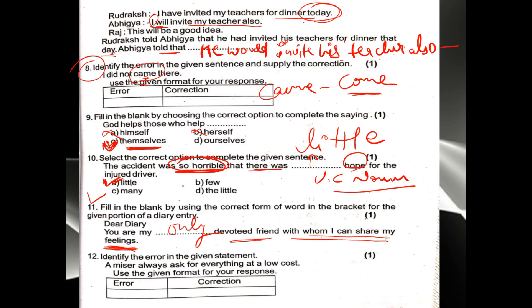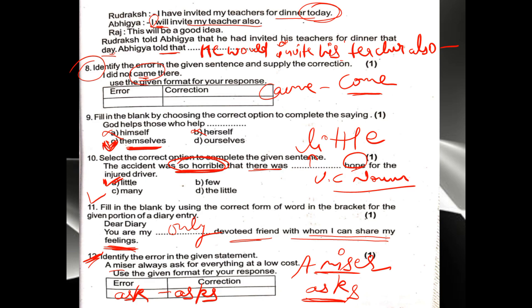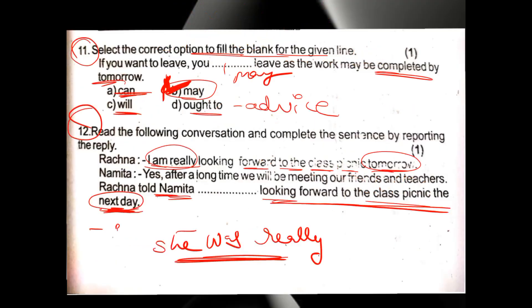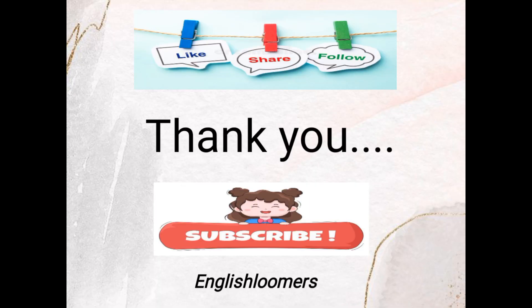Twelfth and last question: 'A miser always ask for everything at a low cost.' Miser means a stingy person — it is a singular subject. With a singular subject, 's' is added to the verb. So 'ask' is the error — it should be 'asks'. Correct: 'A miser always asks for everything at a low cost.' I hope students practice paper 3 and practice paper 4 are now clear with no doubts. Next class we will solve practice paper 5 and practice paper 6. Till then stay curious, stay motivated. Thanks for watching.